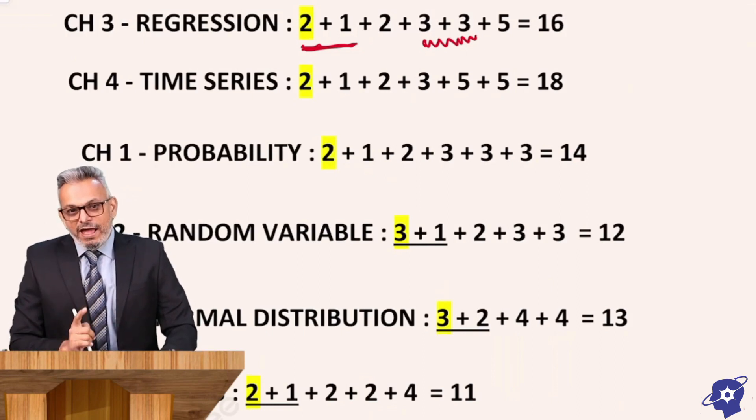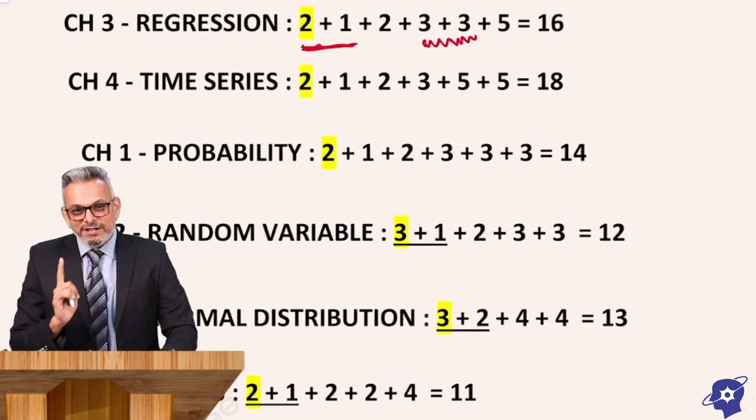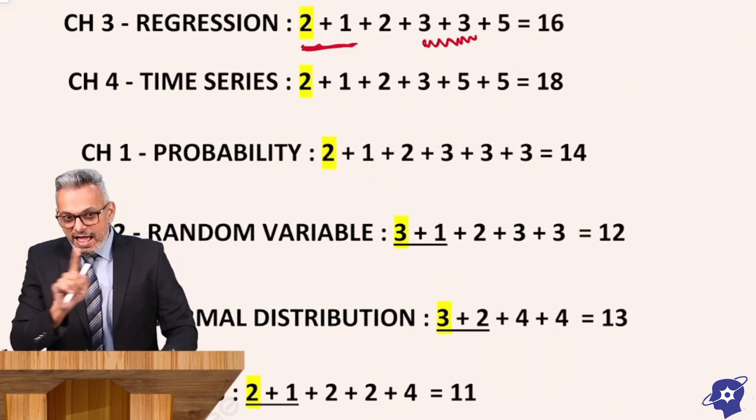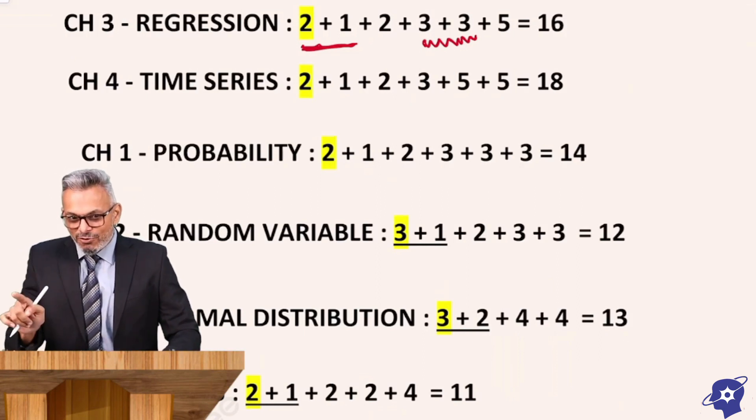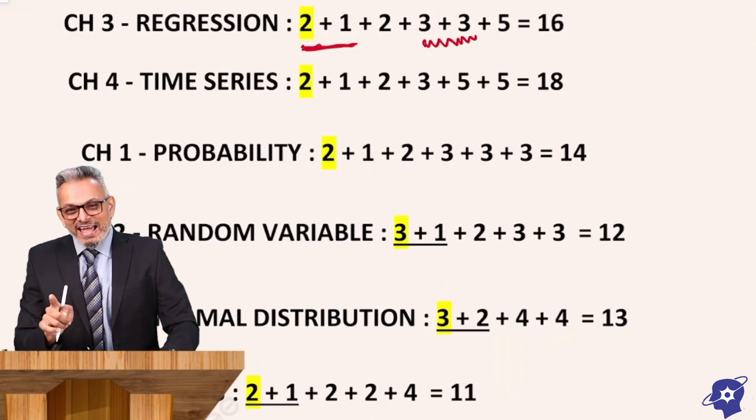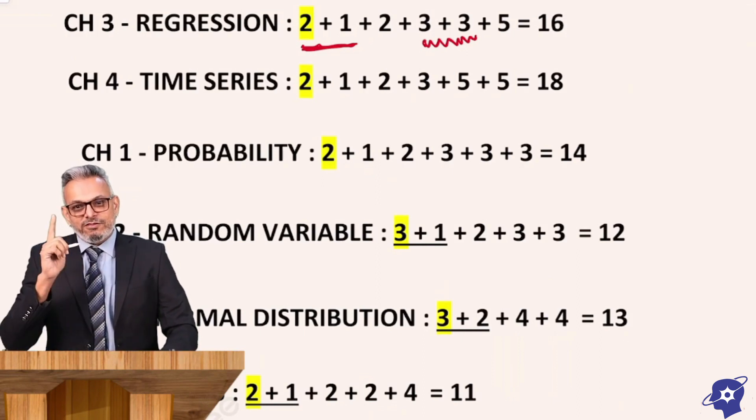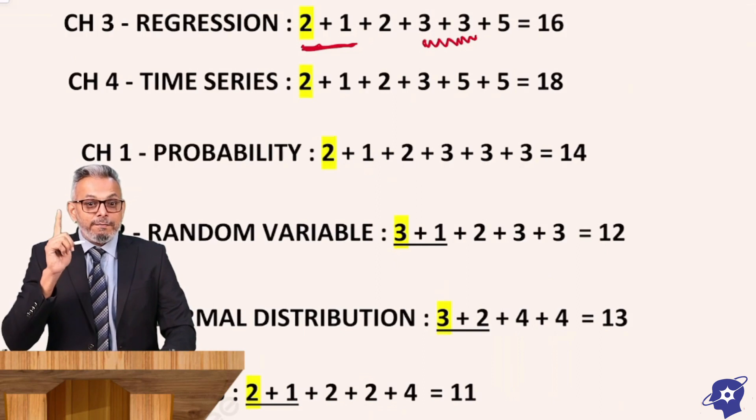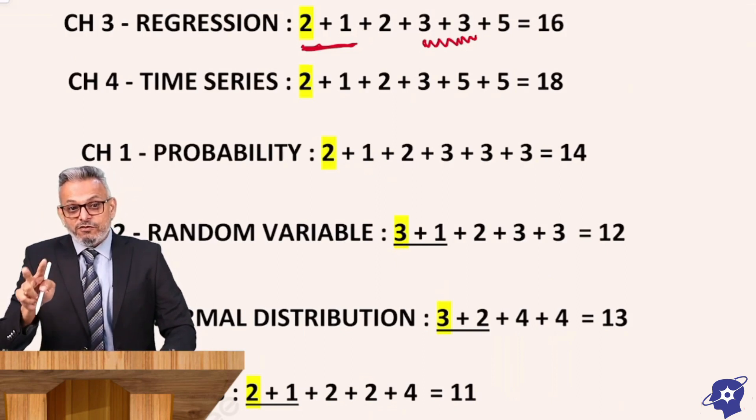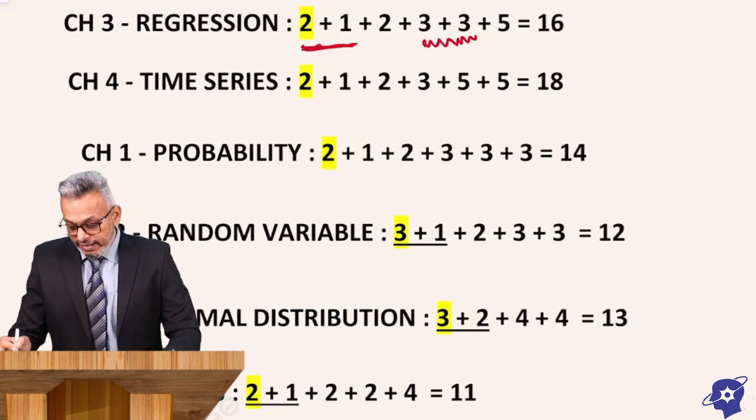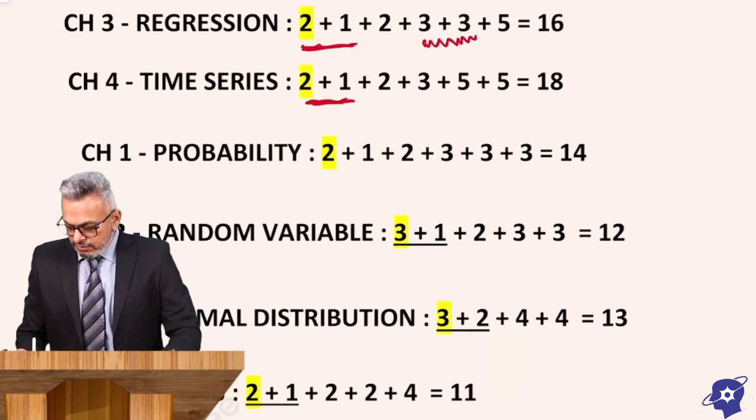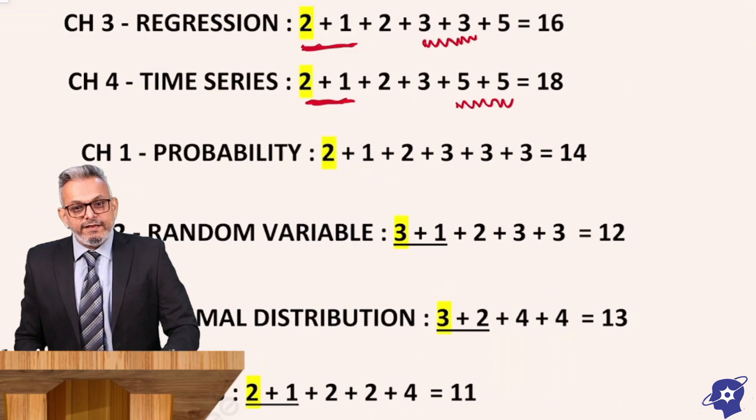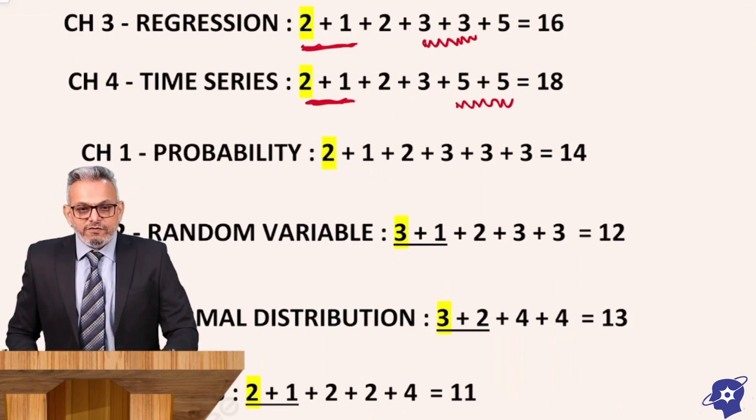We come to the 4th chapter of part 1, that is Time Series. In Time Series, you have 2 marks multiple choice question, 1 mark one liner. One liner is not just 1, it can be more also. So 2 + 1 plus 2 marks single question, 3 marks single question. But then you have 2 big questions from time series, that is 5 + 5. Total comes to 18. Again, I will underline 2 + 1 and highlight 5 + 5. So 2 questions where there will be options.